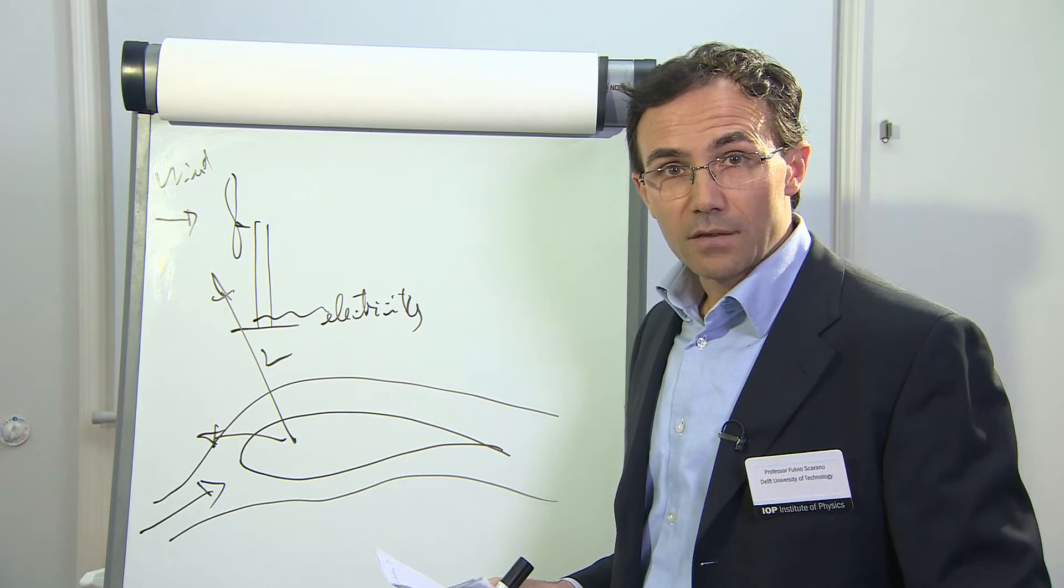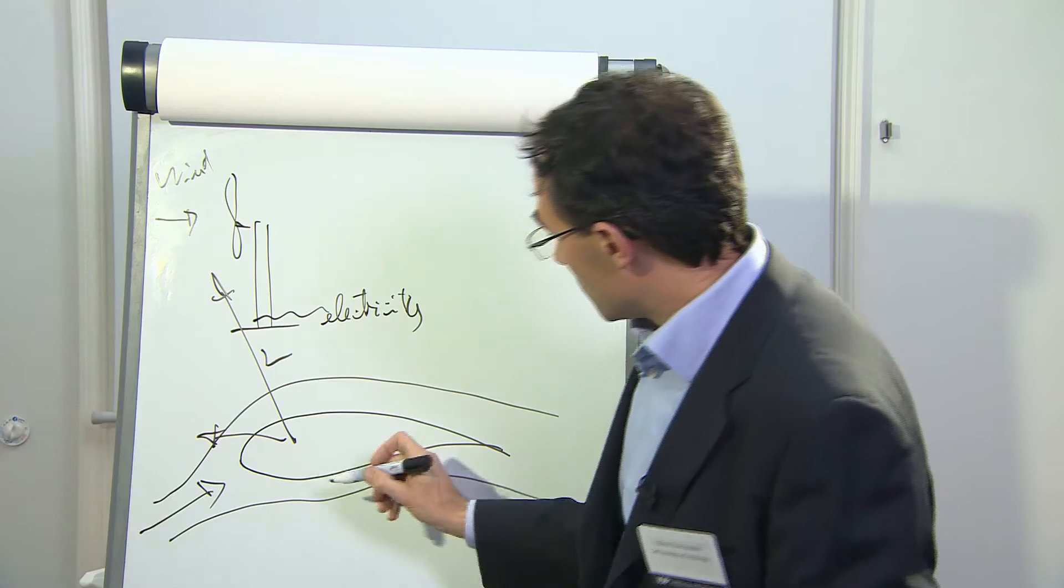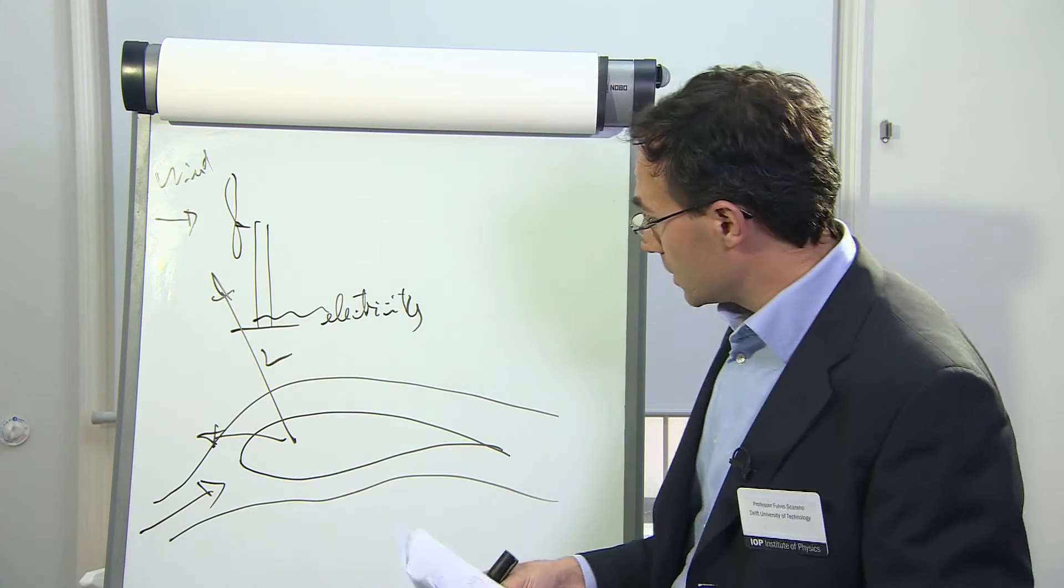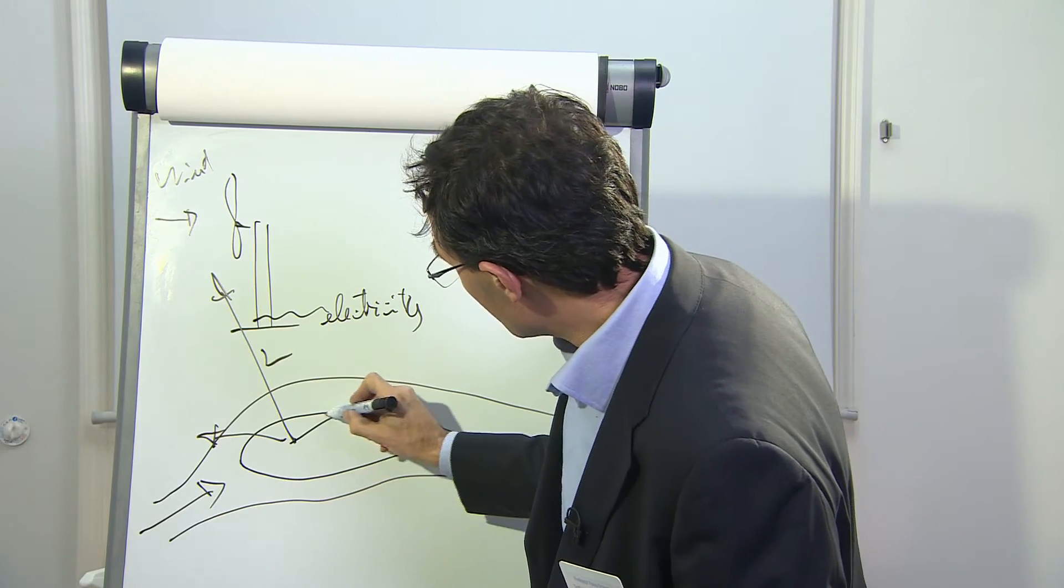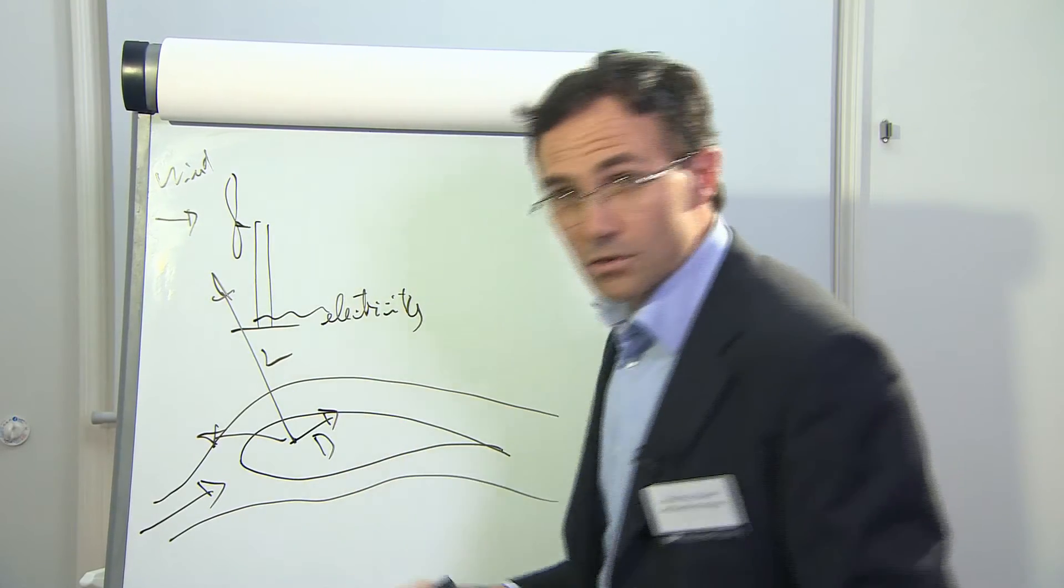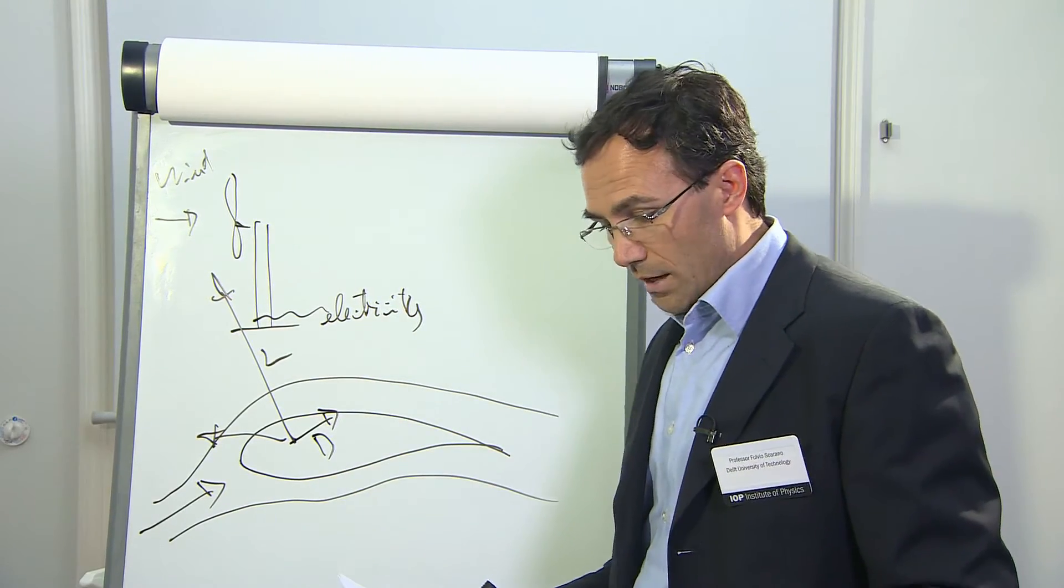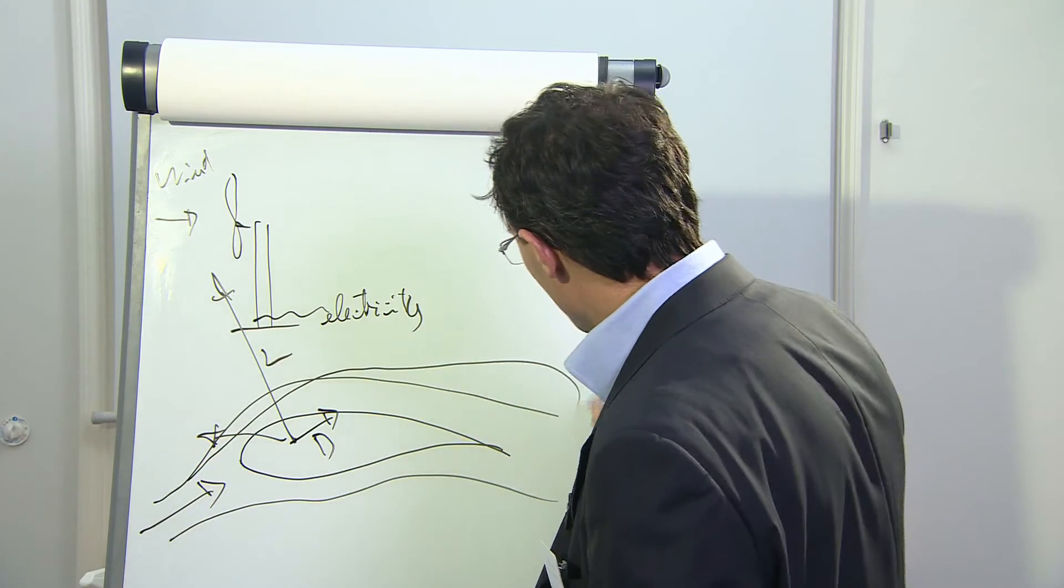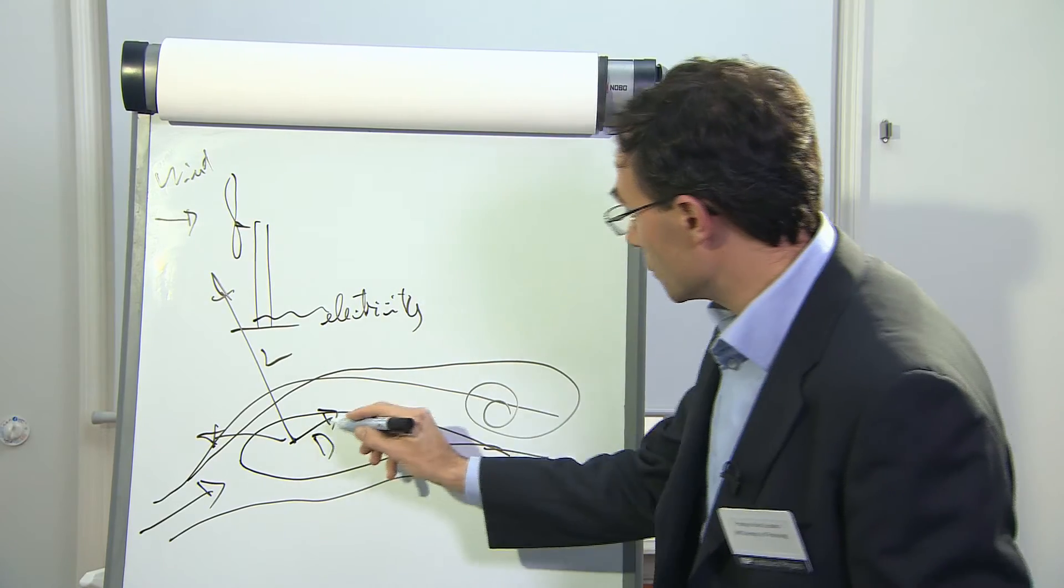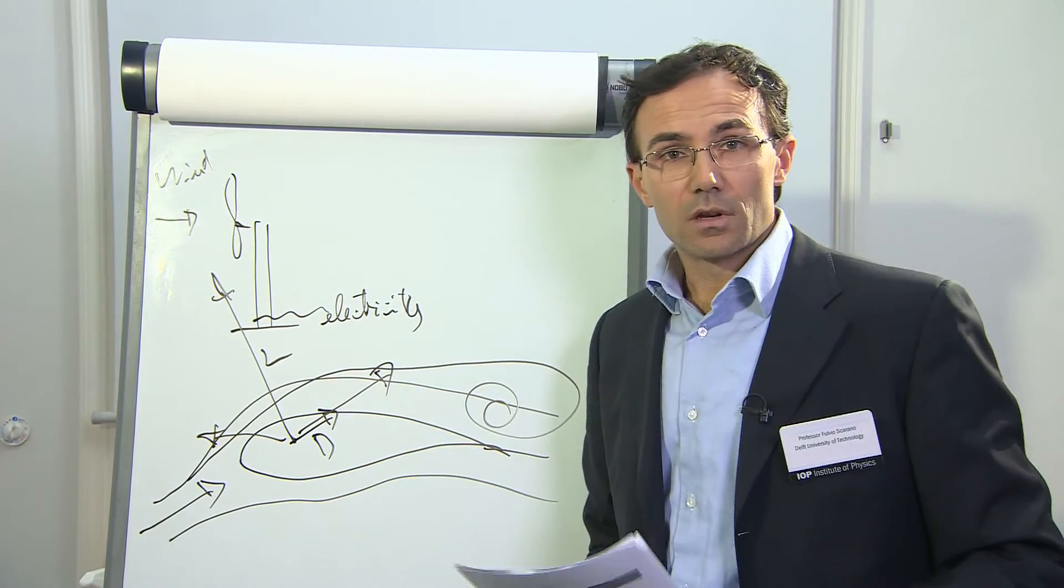But some things have to be taken into account, and they are that the lift component should be taken large enough with respect to the drag, so lift to drag should be high enough, and the flow should not separate from the wing, because flow separation would produce larger and larger drag.